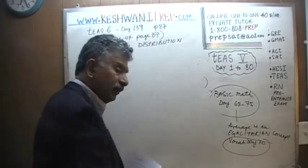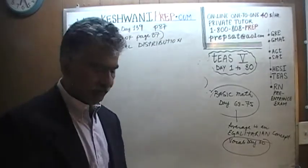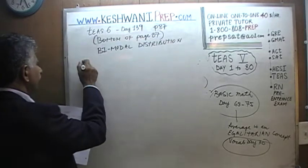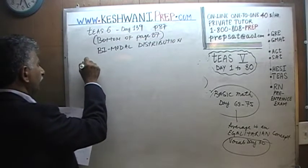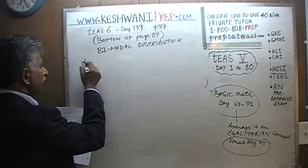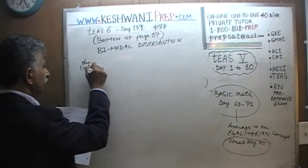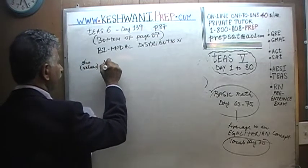Let's first have the data set. Here are the observations — when we say observations, we are talking about the values. And here is the frequency.